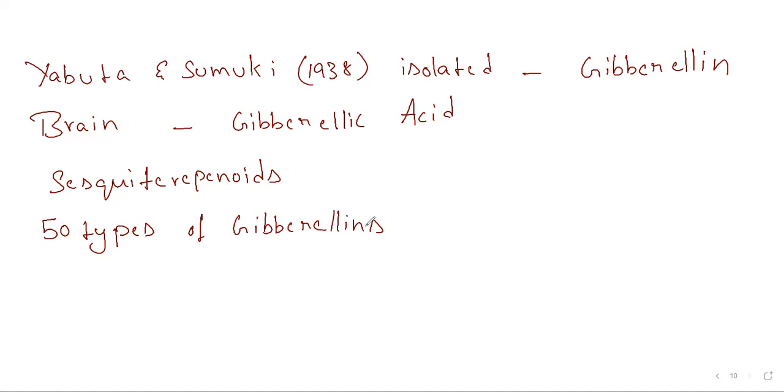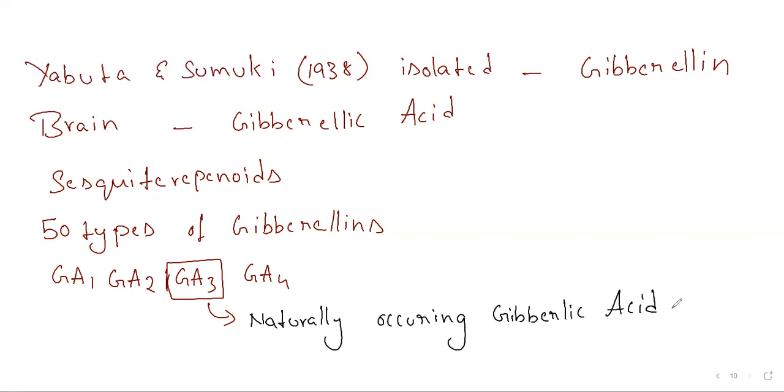They called them GA1, GA2, GA3, GA4, and so on. GA3 is the naturally occurring gibberellic acid. This is from PYQs.